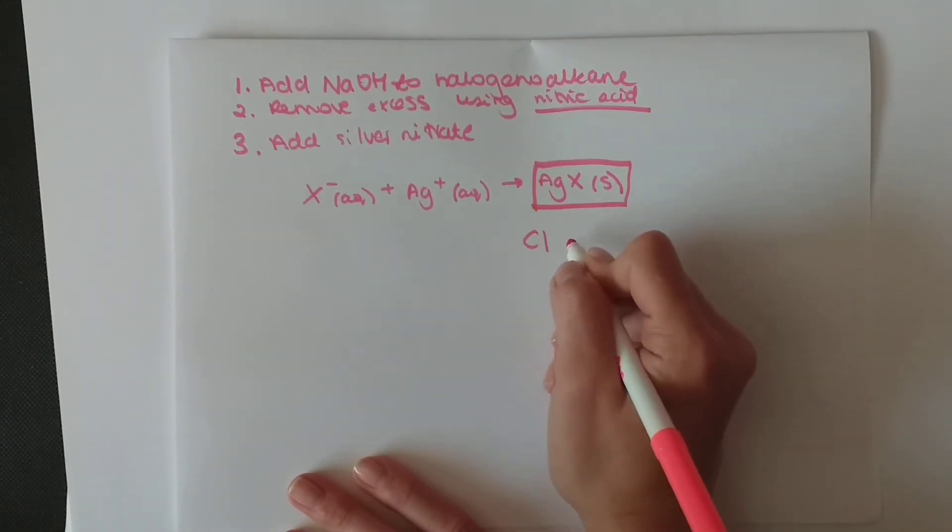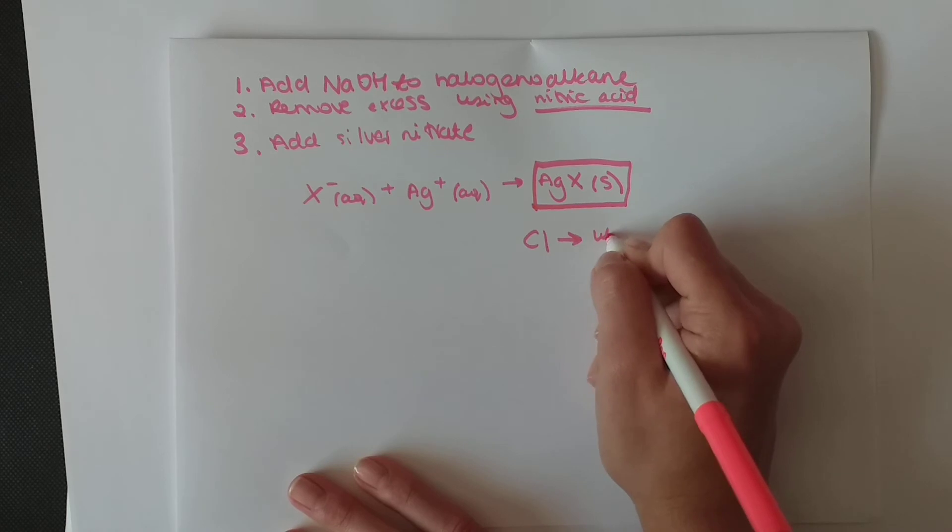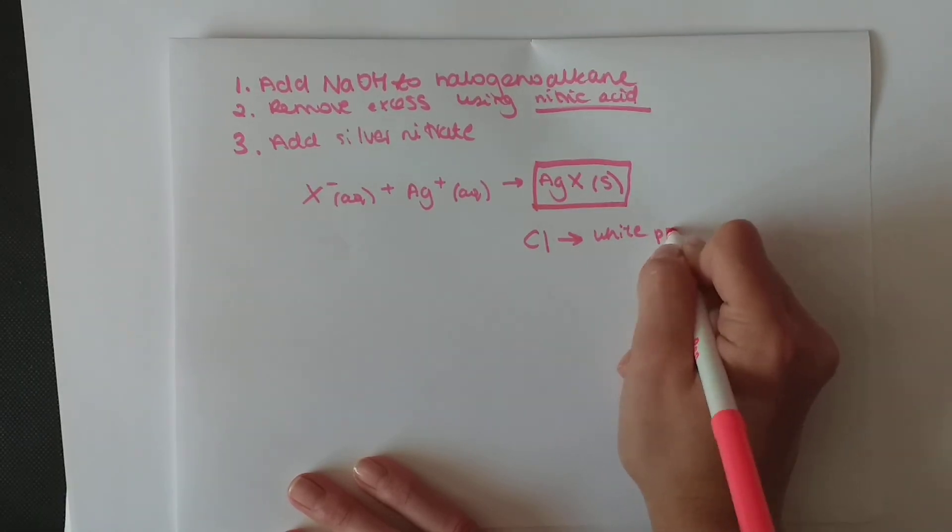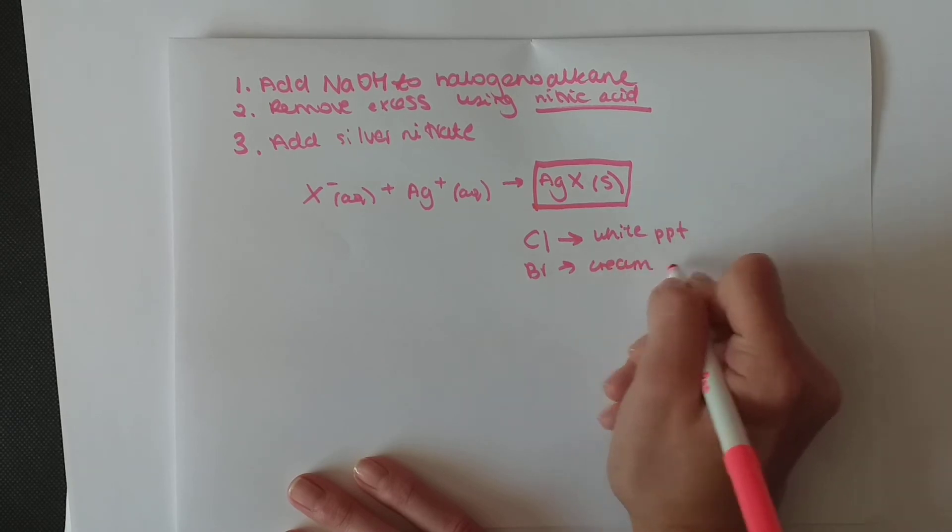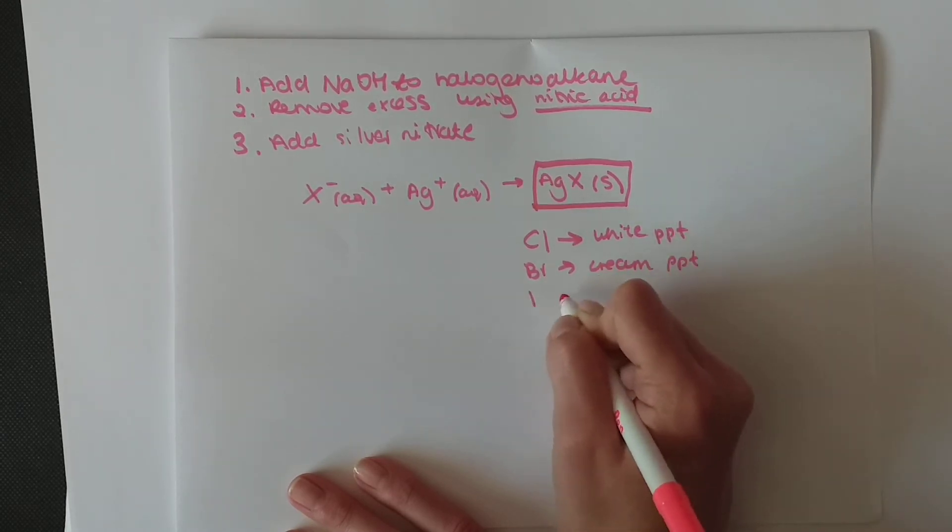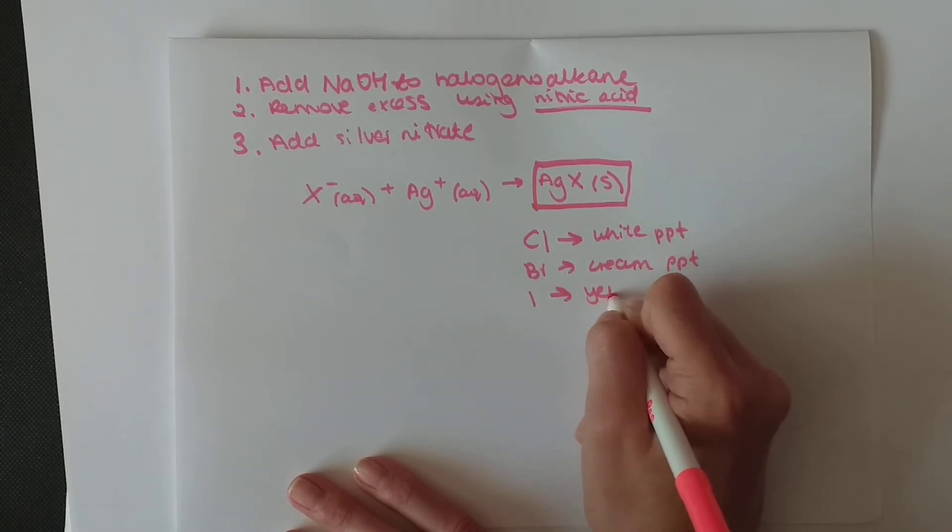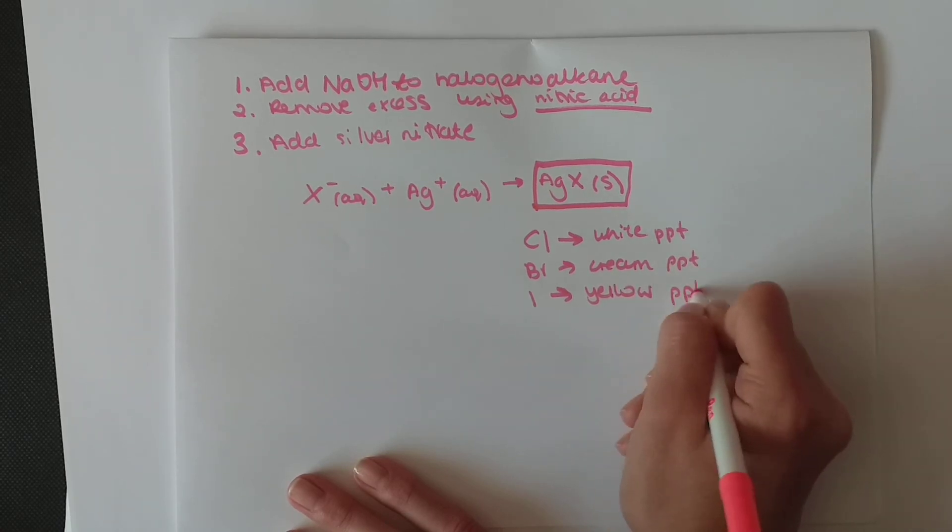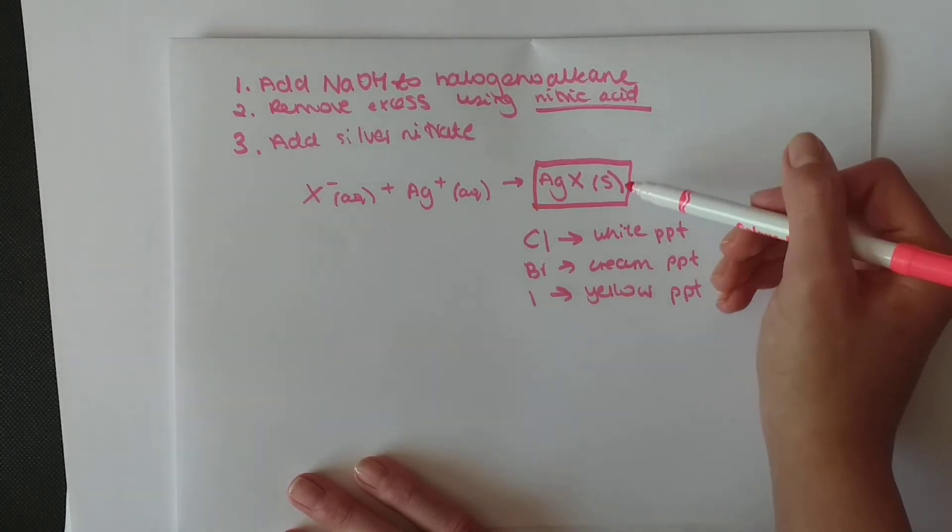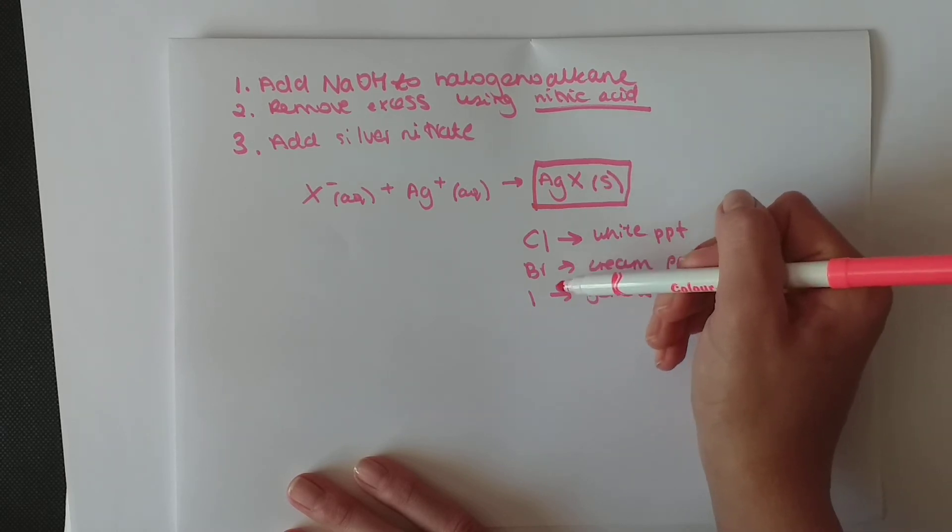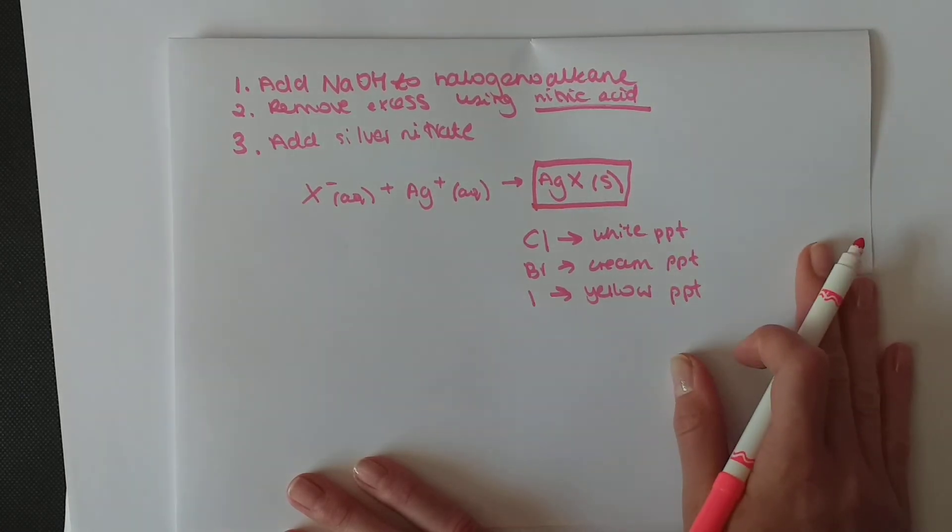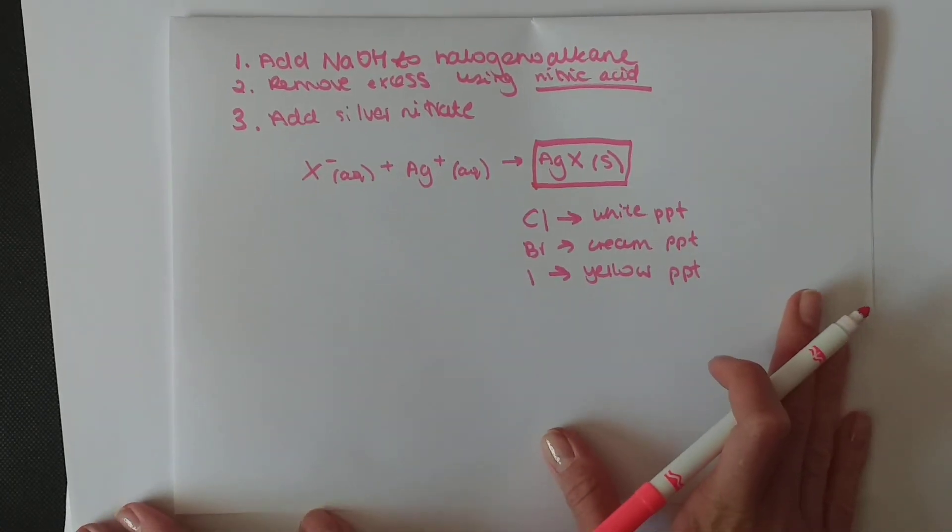What's very important is that precipitate. If it's a chlorine, we're going to get a white precipitate. If it's a bromine, we're going to get a cream precipitate. And if it's iodine, we're going to get a yellow precipitate. So depending on what precipitate we get, that's the halogen that was used in the halogen alkane. And that's the test for halogen alkanes.